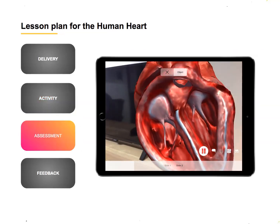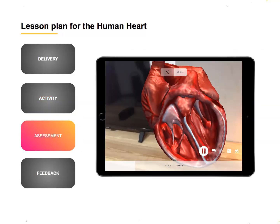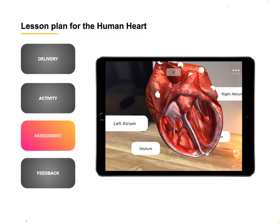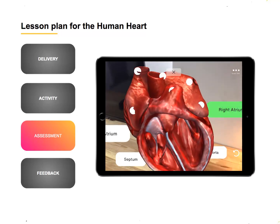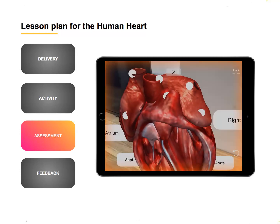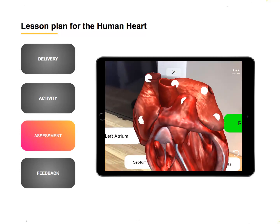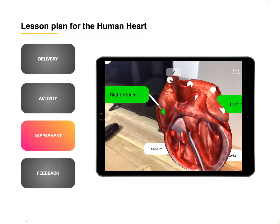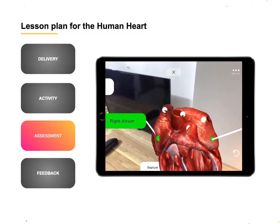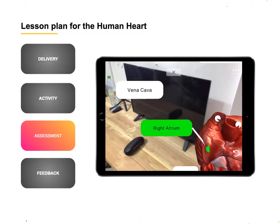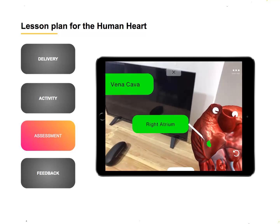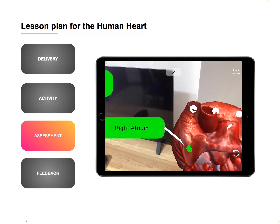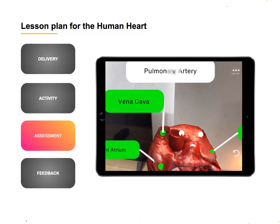Education experts around the world agree that continuous or formative assessment is crucial for students to actively retain knowledge. So at this point the students can move over to the HoLogo game feature where they can start matching the labels of the heart.